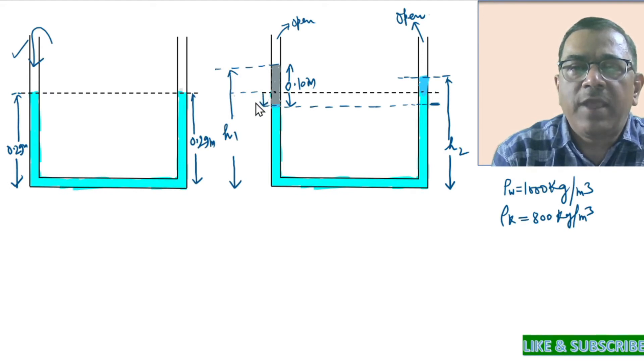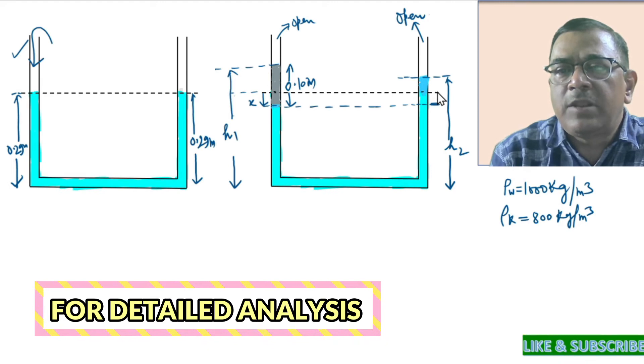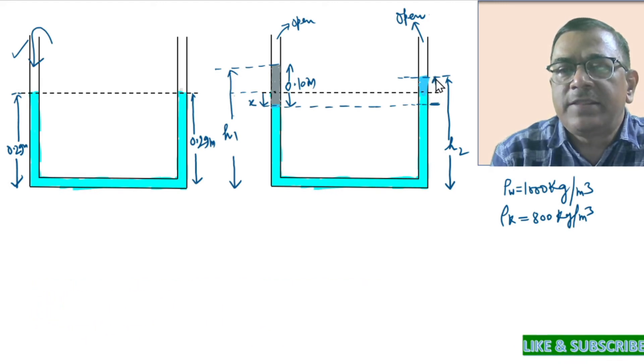So whatever amount the water level drops in the left arm, by the same amount, the level of water should rise in the right arm.